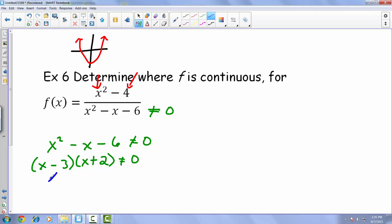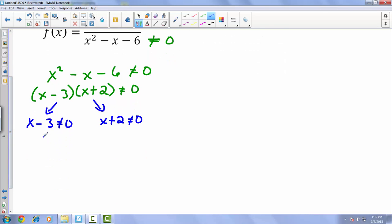Now using that zero product property, we can break these up, end up with x minus 3 is not equal to 0, and x plus 2 is not equal to 0. And then simply just solving for each one. So it looks like it just comes out to be x is not equal to 3 and x is not equal to negative 2.